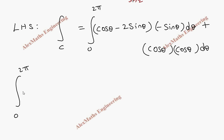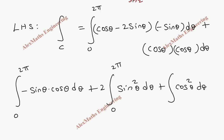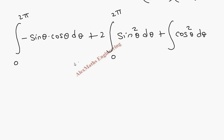Expanding the integral from 0 to 2π: multiplying minus sinθ with the first term gives minus sinθ cosθ dθ, and multiplying minus sinθ with the second term gives plus 2 sin²θ dθ from 0 to 2π, and the last term is cos²θ dθ.